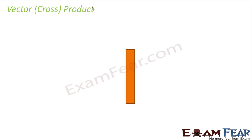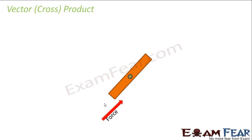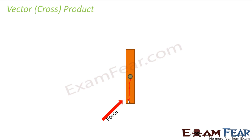To understand vector cross product, let's take this log which has a nail here. Now let's apply some force in this direction. We have a nail and we are applying some force in this direction — what happens is this thing topples. This is my R vector, and the torque produced is force cross product R vector.